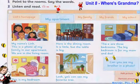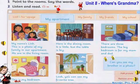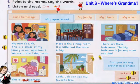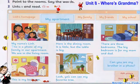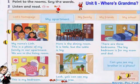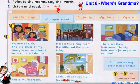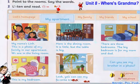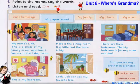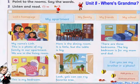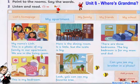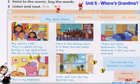Listening 94. Listen and read. My name's Lean. This is a photo of my family in our apartment. We are in the living room. Here is the dining room. It is little but the table is big. There are three bedrooms. The big bedroom is for my mom and dad. This is my bedroom. Look, you can see my favorite tree.